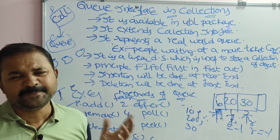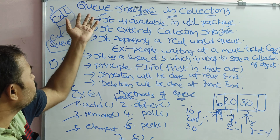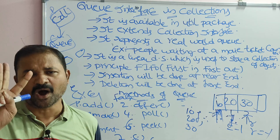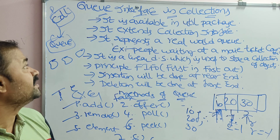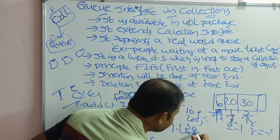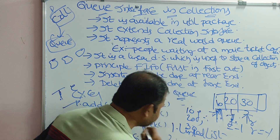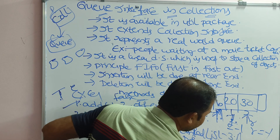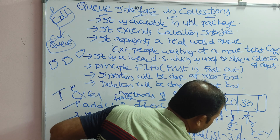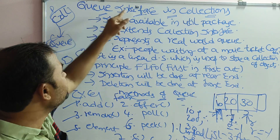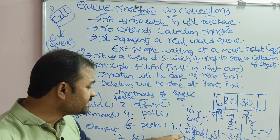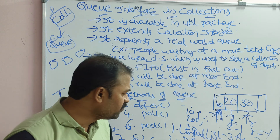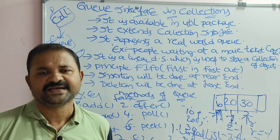We can't implement the Queue interface directly. To use the full functionality of the queue, we have three implementing classes: LinkedList, PriorityQueue, and ArrayDeque. In upcoming videos we will cover the LinkedList representation, PriorityQueue representation, and ArrayDeque operations.